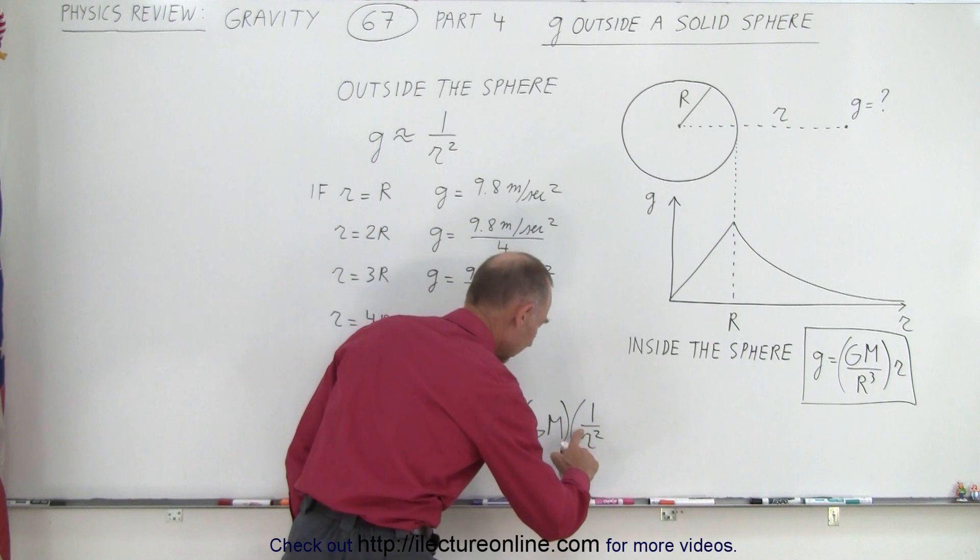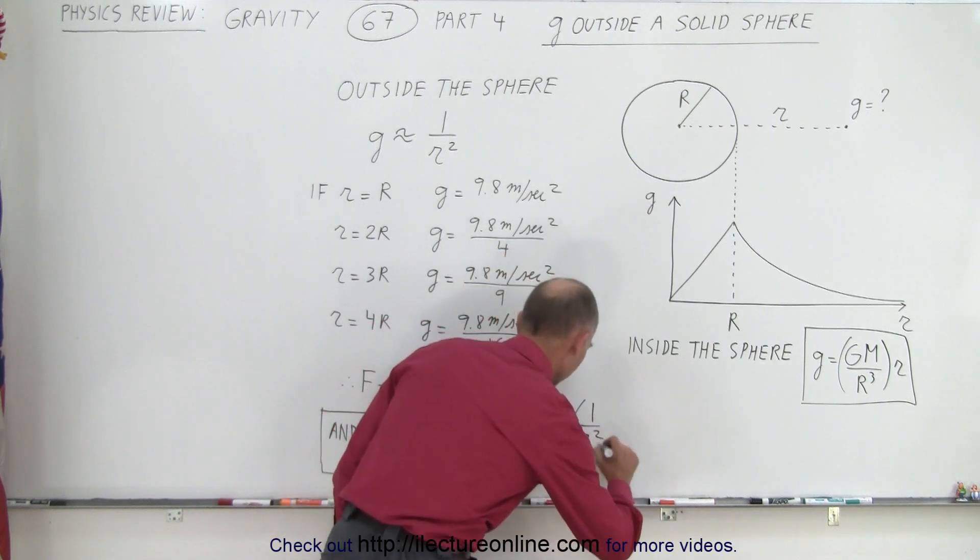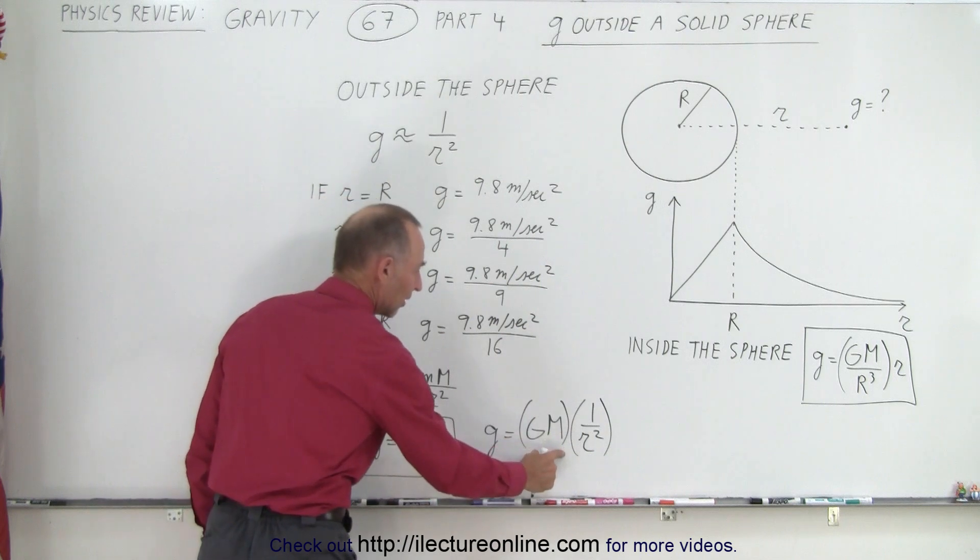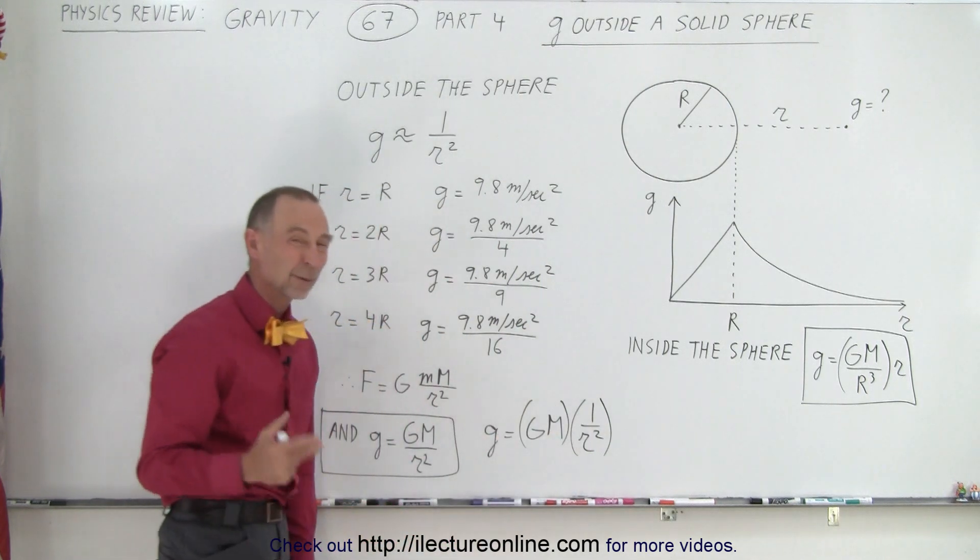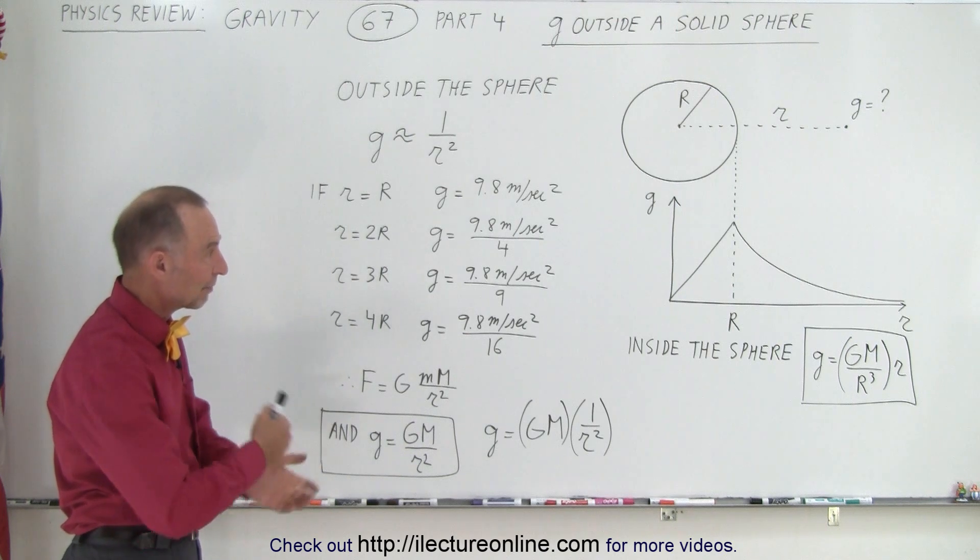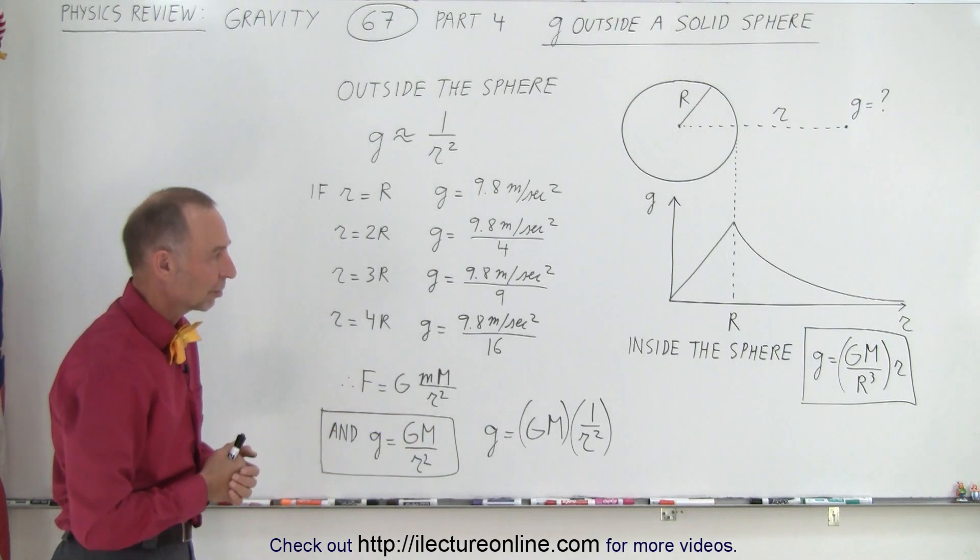And that's a terrible looking r. Let me correct that. There we go. That's a better looking r. And so simply it's a constant times 1 over r squared, if you want to look at it that way. And that's how we look at the acceleration due to gravity outside a solid sphere.